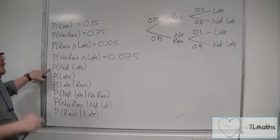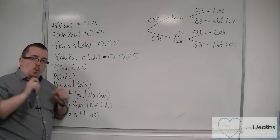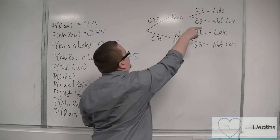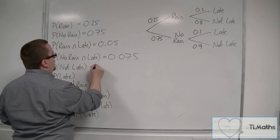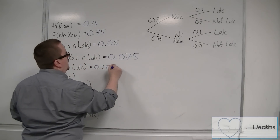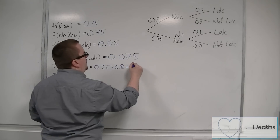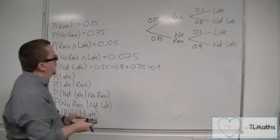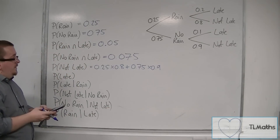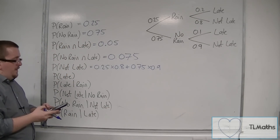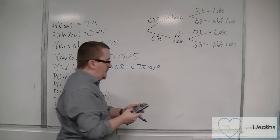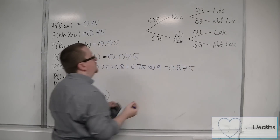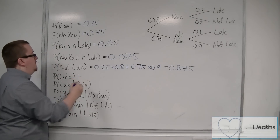How about the probability of them not being late? Well, there are two ways of them not being late — it either rained or it didn't rain. So we have 0.25 times 0.8, plus 0.75 times 0.9. That gives us 0.875. So that's the probability of them not being late.